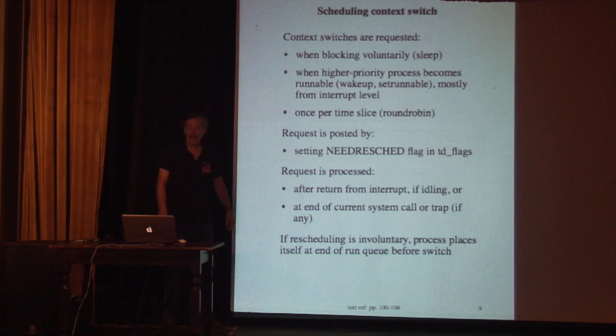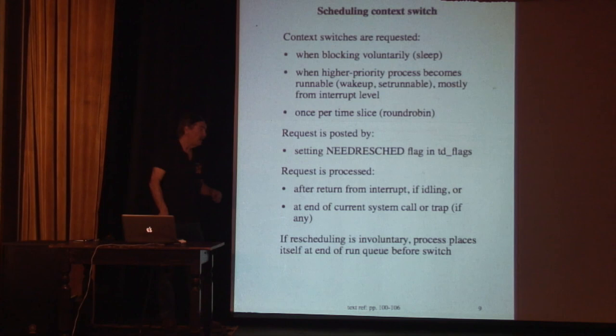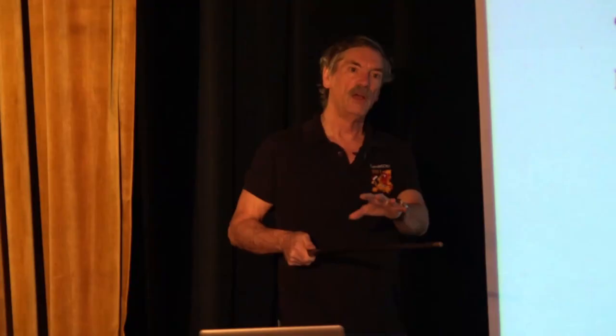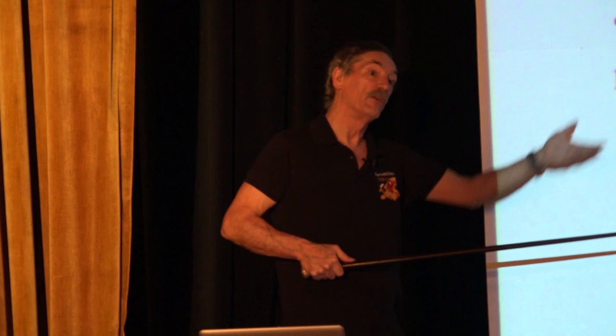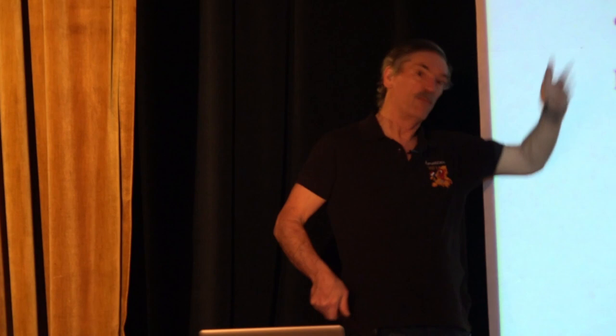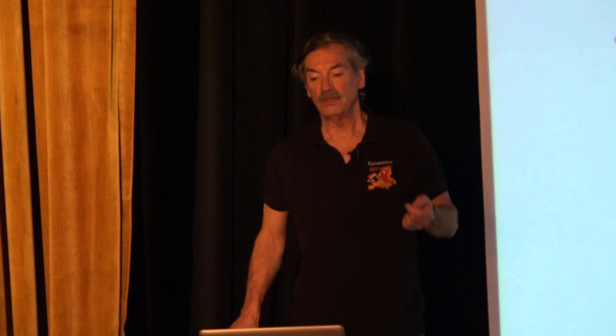If the rescheduling is involuntary — we're switching not because the previous process went to sleep, but because a higher-priority process wants to run — then the process we're switching away from still wants to run. So we need to put it back onto the run queue. What happens is we take a process off the run queue, run it, and if it goes to sleep we just find the next one. But if it wants to continue running because it's used up its time slice or is being preempted, we must put it back onto the appropriate run queue so it can continue later.